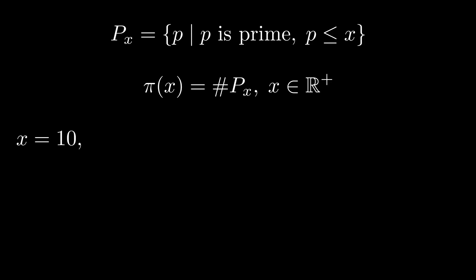So for example, when x is equal to 10, the prime numbers less than or equal to 10 are 2, 3, 5, and 7. So we can see that we have four numbers, so π(10) will give us 4.